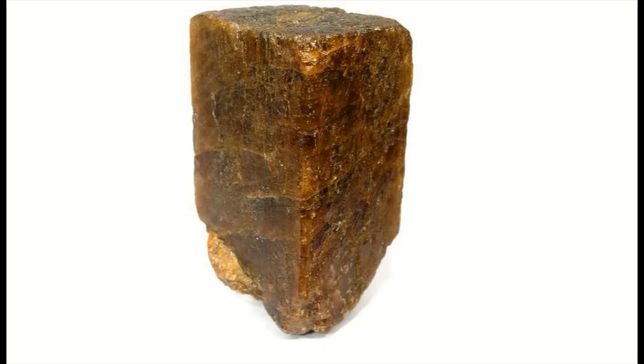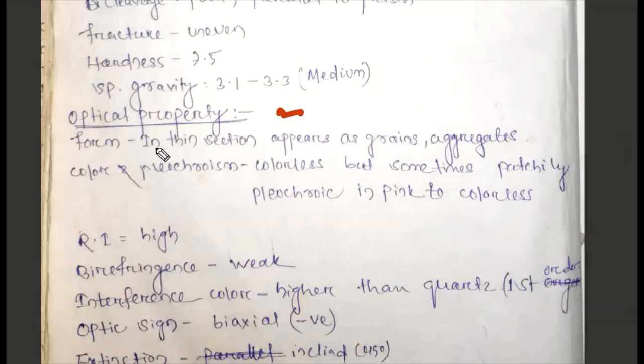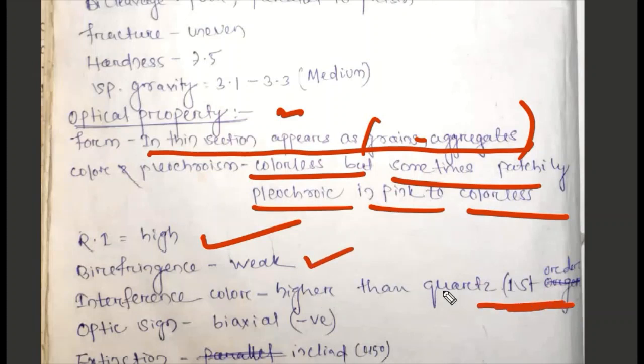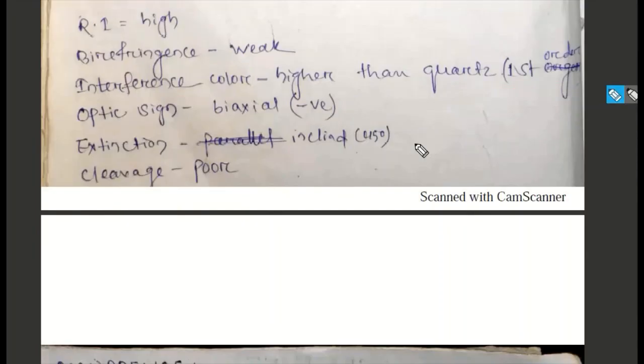Optical property: In thin section appears as long slender crystals and grain aggregates. Color and pleochroism is colorless but sometimes partly pleochroic in pink. Refractive index high, birefringence weak. Interference color first order. Optic sign biaxial negative. Extinction inclined, 45 degrees.